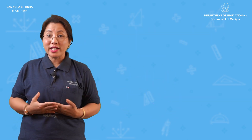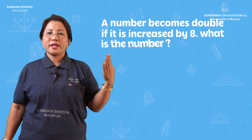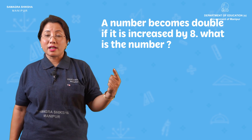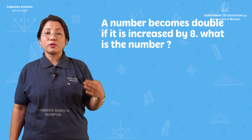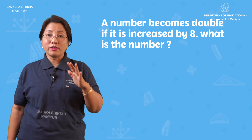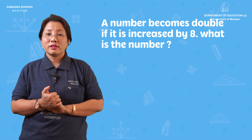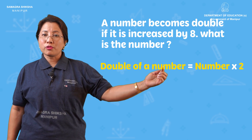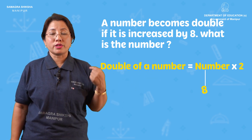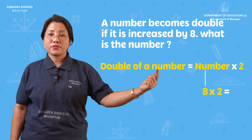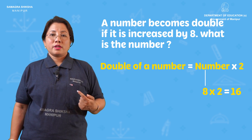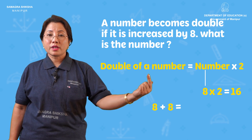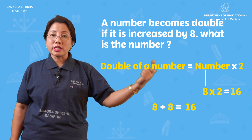If a number becomes double when it is increased by 8, what is the number? Double of a number equals 2 times the number. The number is 8. Eight into 2 is 16. Eight plus 8 is also 16 — so the number is 8.